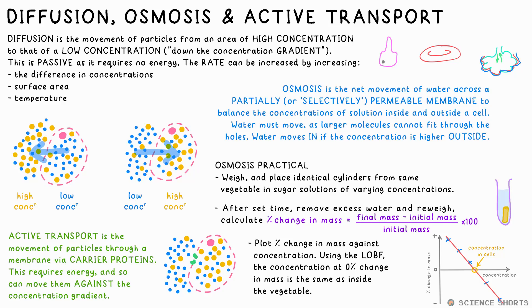Glucose and other nutrients and minerals can move through a membrane by active transport, whereby carrier proteins in the membrane use energy to move substances through. As there's energy used in this case, this can actually move them against the concentration gradient — for example, moving mineral ions into plant root hair cells.